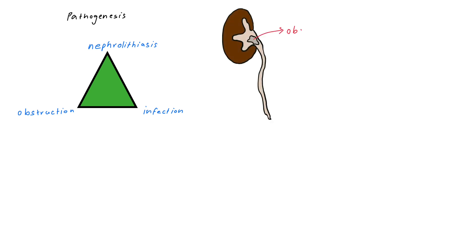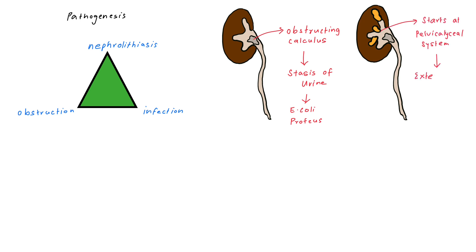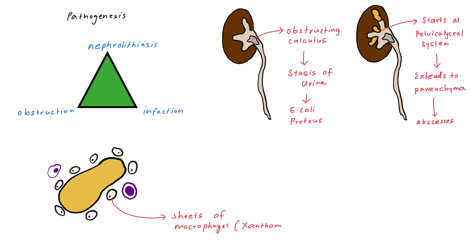The starting point is an obstructing calculus. The obstructing calculus causes stasis of urine, and because of stasis there can be proliferation of bacteria like E. coli and Proteus. The infective process starts at the pelvicaliceal system and extends to the parenchyma. When it extends to the parenchyma, it forms small abscesses surrounded by sheets of macrophages called xanthoma cells, interspersed with plasma cells and giant cells. The inflammatory process ultimately leads to destruction of renal parenchyma.